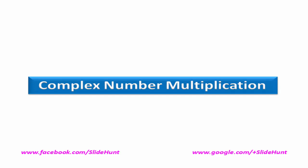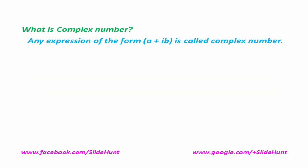But before this, first we have to know what is a complex number. Any expression of the form A plus IB is called a complex number. A complex number has two parts: one is called the real part and another is called the imaginary part. If we consider A plus IB as a complex number, then A is called the real part and B is called the imaginary part.